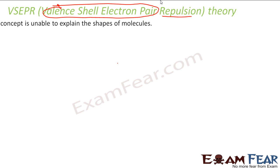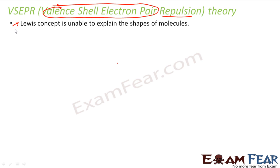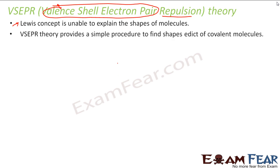The reason we study this theory is because we have studied the Lewis concept, and with Lewis, we are not able to find the exact shape of a molecule. Lewis doesn't help us find the exact shape of a molecule. So this theory was proposed to provide shapes of covalent molecules. Please note — this is for shapes of covalent molecules only.